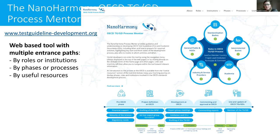The Nanoharmony OECD test guideline and guidance documents process mentor is a web-based tool at testguideline-development.org. It is a tool that has multiple entrance paths — you can go in by role or institution, by phases or processes, and it also contains useful resources. You can click on the different institutions listed to get more information on how they can get involved into the process of test guideline development, and you can get timelines, tips and tricks, and all other relevant information.